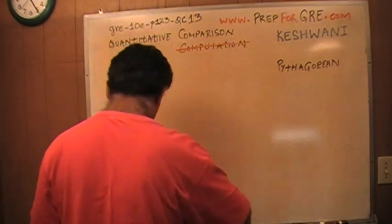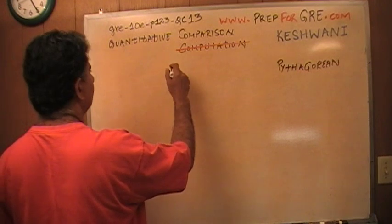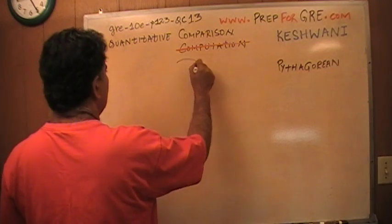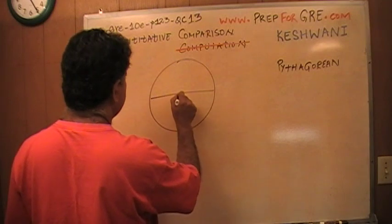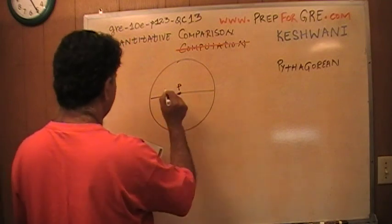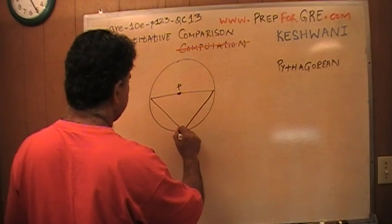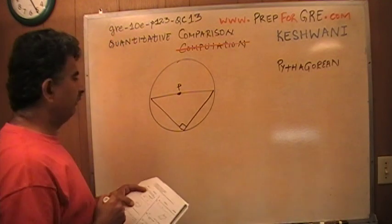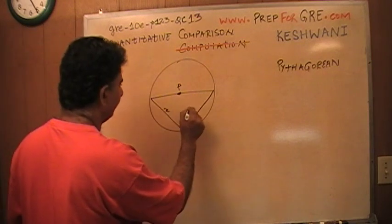We are given a picture which looks something like this. This is the center which is P, and then we are given a triangle at 90 degrees. We are told that this side is x and this side is x.